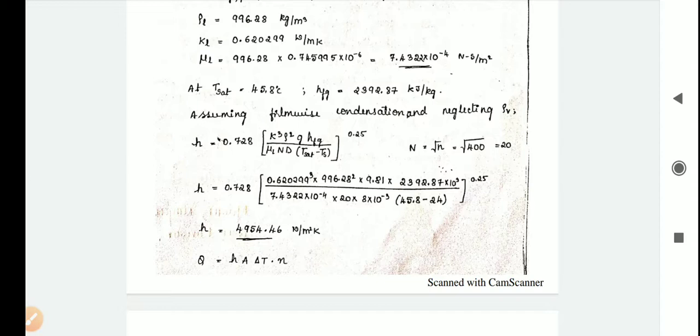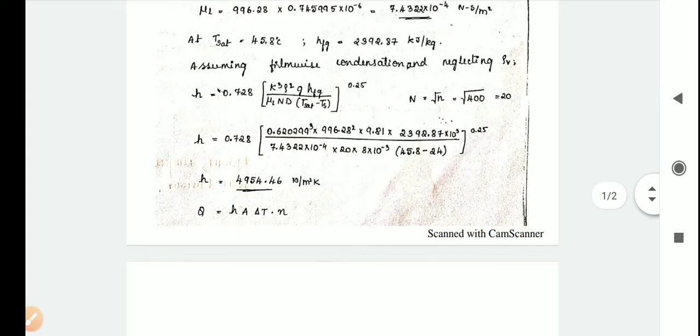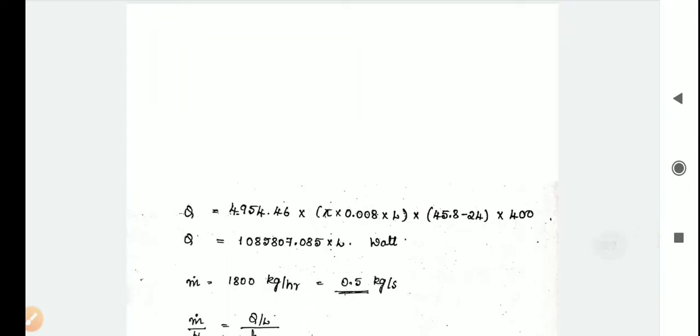h equals 4954.46 watts per meter squared degree Kelvin. Next, Q equals h A into delta T into n.